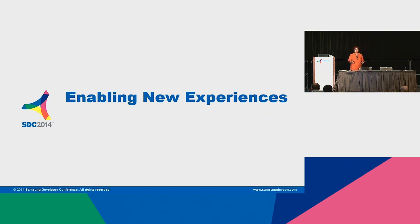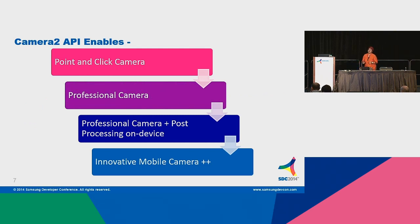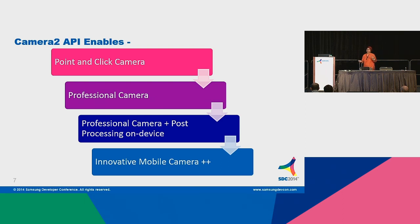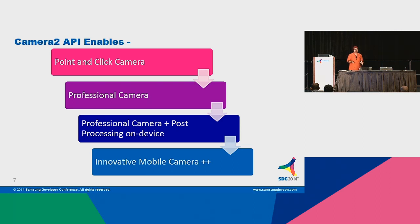The new Camera 2 API is really born of the Stanford project called FCam. A lot of those people went to Google, and the person leading the camera framework team is from the original FCam team. It really enables new experiences — it has the old point-and-click, but it also has DSLR-like professional camera functionality. With DSLRs, some people just take pictures and store their JPEG, but a lot of them download raw onto their computers and do post-processing. Professional camera plus post-processing on the device itself is now possible, given that processing power on our devices has grown 64 times in the last decade.